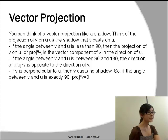In the last case, if v is perpendicular to u, then v casts no shadow. So the angle between these two vectors, v and u, is exactly 90 degrees, and the projection of v on u will be equal to 0.